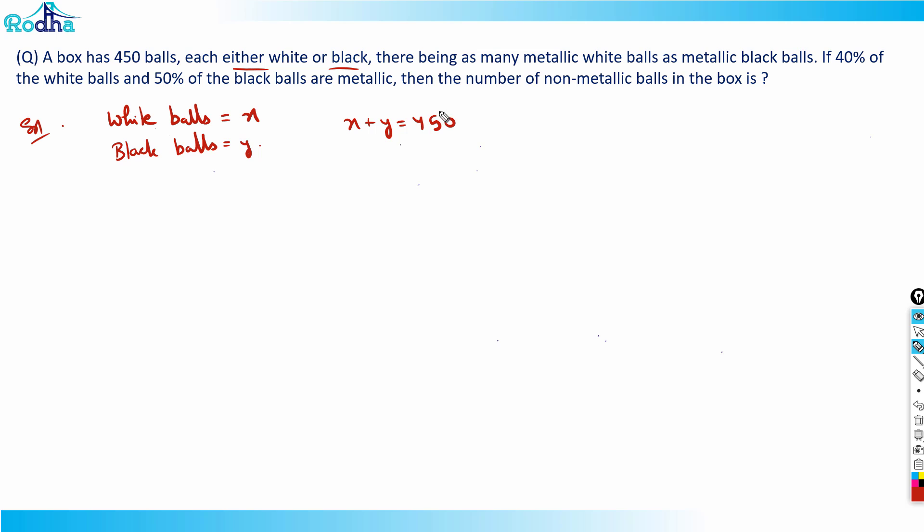Now it says there are as many metallic white balls as metallic black balls. If 40% of the white balls and 50% of the black balls are metallic, what I can say is that the number of metallic white balls will be 0.4X, that is 40% of X.